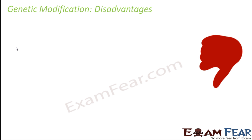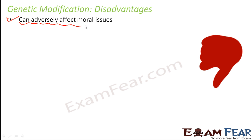As for the disadvantages, genetic modification can adversely affect moral issues. It has been found that in many areas, certain countries that are traditionally very rich have a lot of traditional knowledge — India is one of them. However, such developing countries do not have a strong background in technology or money, whereas certain economically strong countries do not have much traditional knowledge.